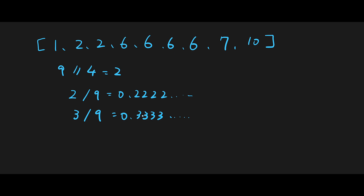If we include the current number, 2 plus 1 is 3, and 3 divided by 9 is 0.333, which is more than 25%. Also, we don't have to iterate all numbers — we only go up to total length minus quarter.